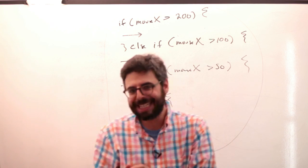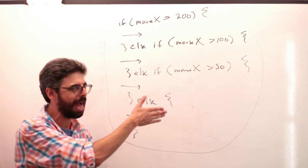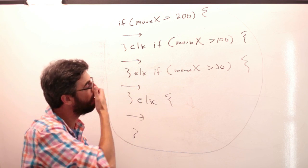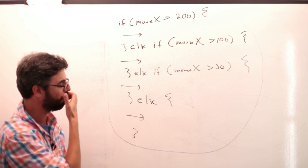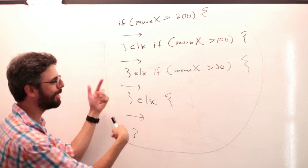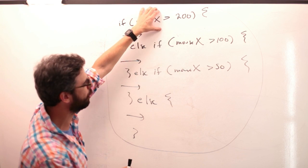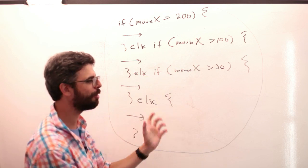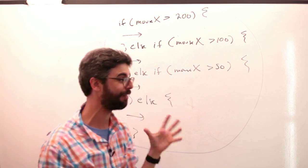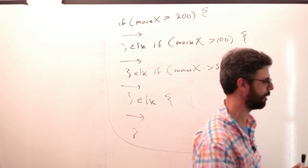This makes more sense with a practical example — testing where the mouse is on screen. I'm going to put this in code, but in a slightly different order: starting with mouseX greater than 50, then 100, then 200. I'm going to reverse this order and it's not going to work, and I want to discuss why — which is a key aspect of how else if works. This is a really tricky, interesting problem if you haven't seen it before.